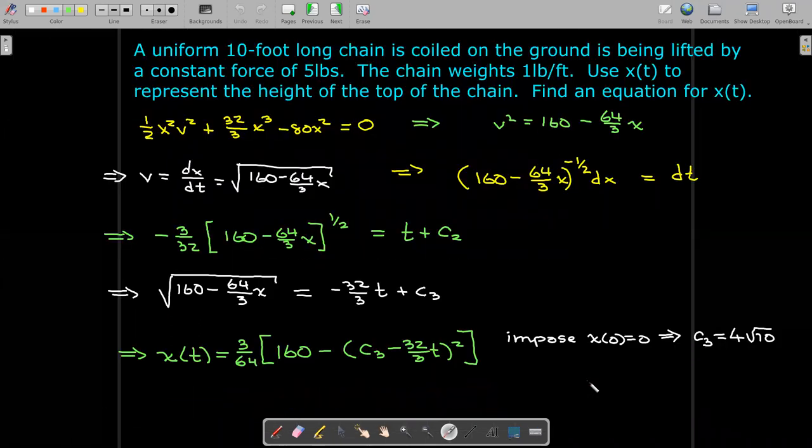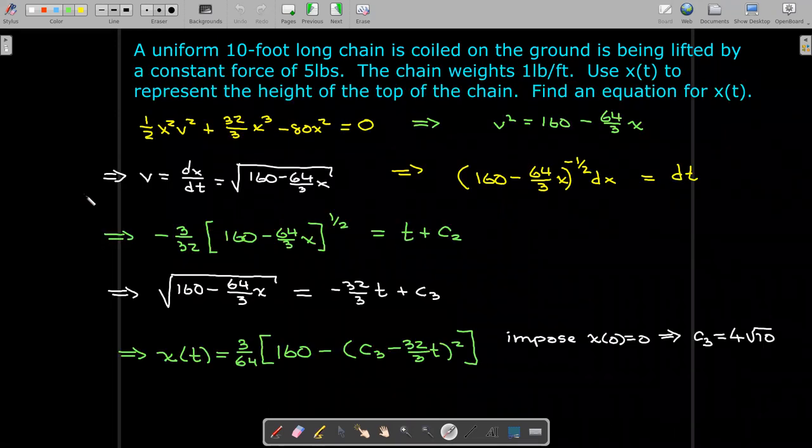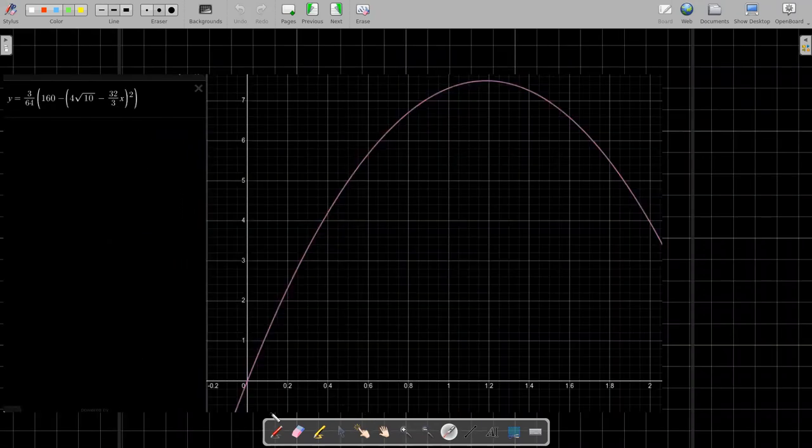Because let's go back and look at the situation. Our upward force is 5. So when we have pulled up 5 pounds, which would be 5 feet of chain, it's not going to go up anymore. Now it's in equilibrium. It's balanced. The upward force is going to equal the downward force. So really, as soon as we reach 5 feet—and of course that's going to be after half a second—this equation is no longer valid. So really, our interval of convergence should be from 0 to 0.5.